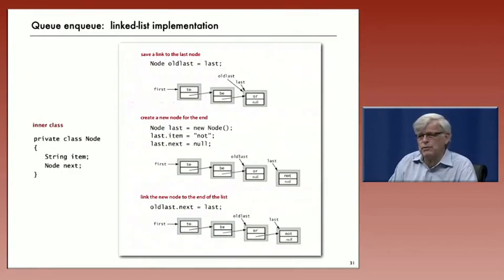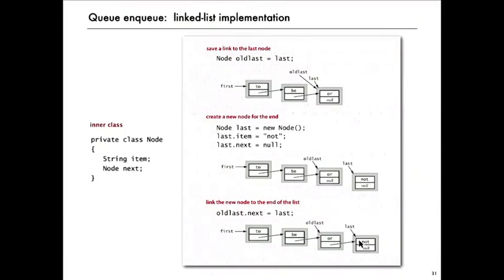So to add it at the end, first thing we need to do is save a link to the last node. We're going to need that because we need to change its reference from null to point to the new node. Then we'll create a new node for the end of the list. We'll populate its fields. And then that old link will change that from null to a pointer to the new node.